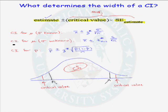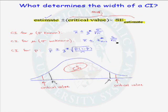Let's consider the confidence interval for mu when sigma is unknown. The standard error of our estimate x-bar is given by the sample standard deviation s divided by the square root of n. Again, increasing our sample size n will decrease the width of our confidence interval.